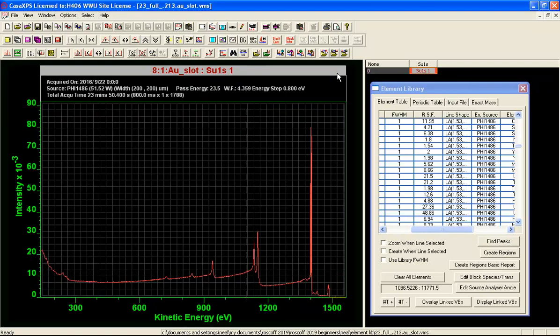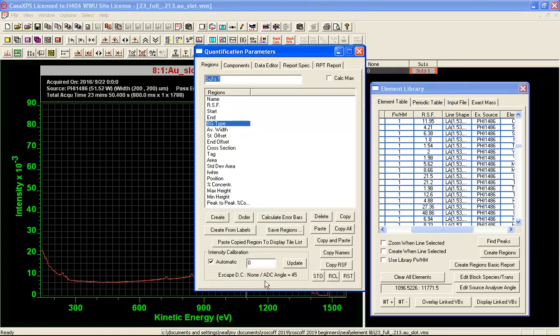At this point, we have data that recognize the fact that they have an angular distribution correction that needs to be performed for an angle of 45 degrees. There's a transmission function that is active and that was brought in from the SPE file. The escape depth correction currently is set to none. This is because if these were PHI sensitivity factors, the escape depth would already be included in the sensitivity factors that are supplied by PHI.